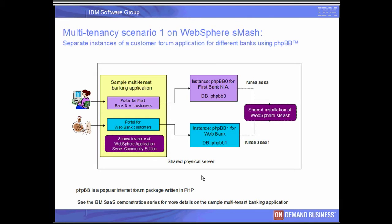Here we show the deployment topology. We will show the existing customer portals for two banks, FreshBank NA and WebBank. These portals run on a shared instance of WebSphere Application Server Community Edition. For each bank's portal, we will create a separate installation of the PHP BB forum application on a shared installation of WebSphere Smash. Each bank's forum will run in separate instances of WebSphere Smash, isolated by different operating system processes running as different users, SaaS and SaaS1.